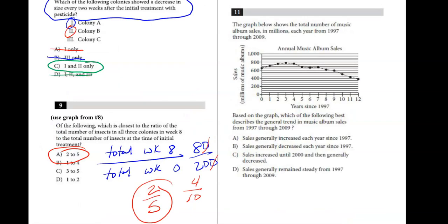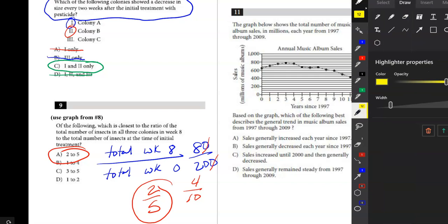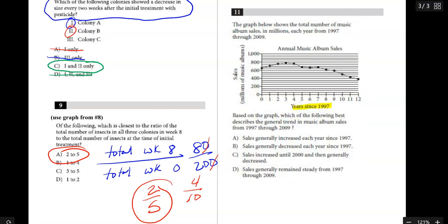All right, number 11. The graph shows the total number of music album sales back in the day, 1997 through 2009. One thing to notice on the chart here is that the bottom is labeled that it's years since 1997. So notice when they come over here and they start at zero, this year right here is 1997. So 10 years later, which would be this point, would represent 2007, and at the end of the graph there would be 2009.